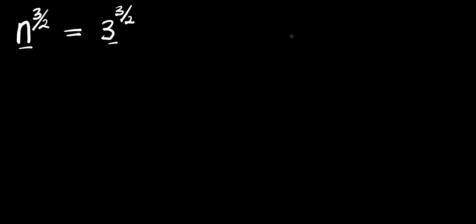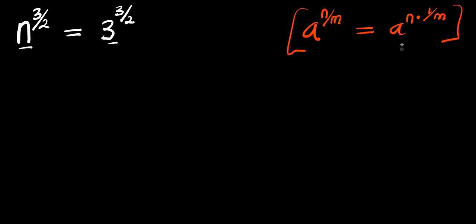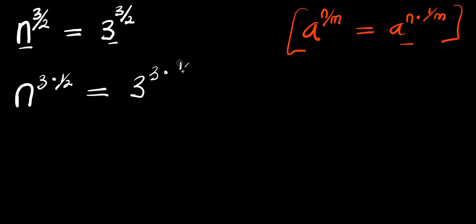Now let's consider this identity. If you have a power n divided by m, this simply means a power n times 1 divided by m. So applying this identity, this means we are going to have n power 3 times 1 divided by 2, and this equals 3 power 3 times 1 divided by 2.